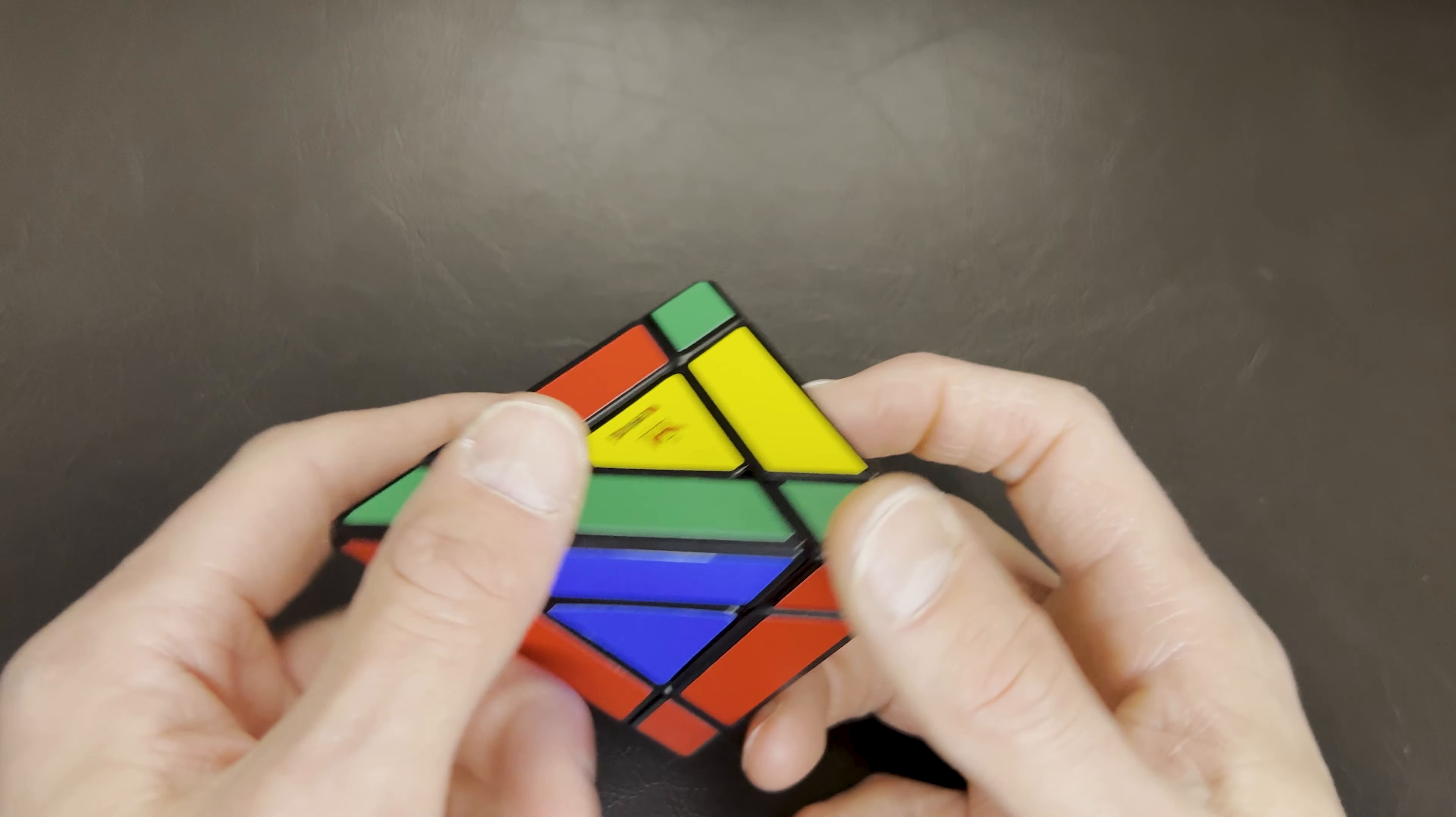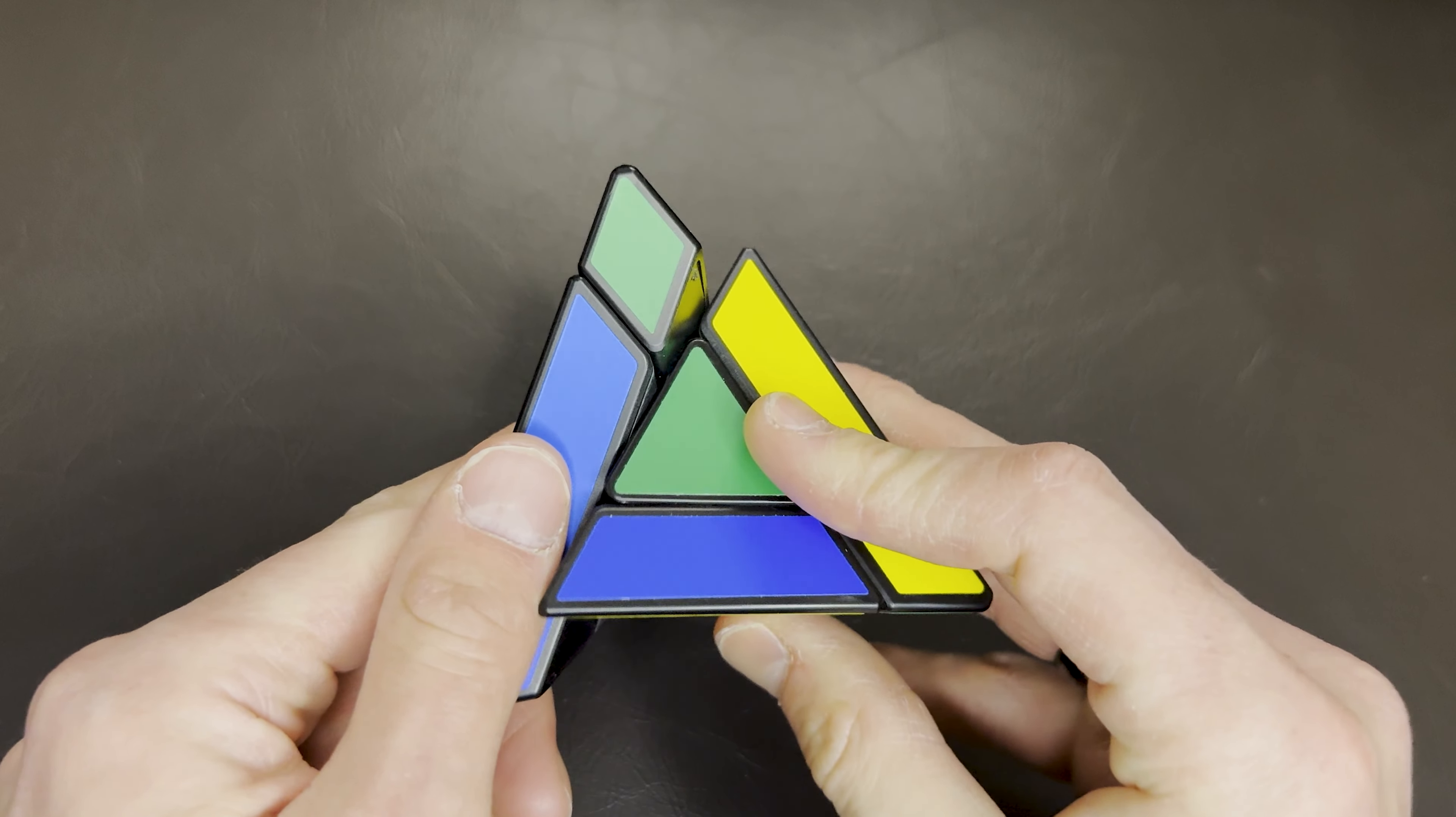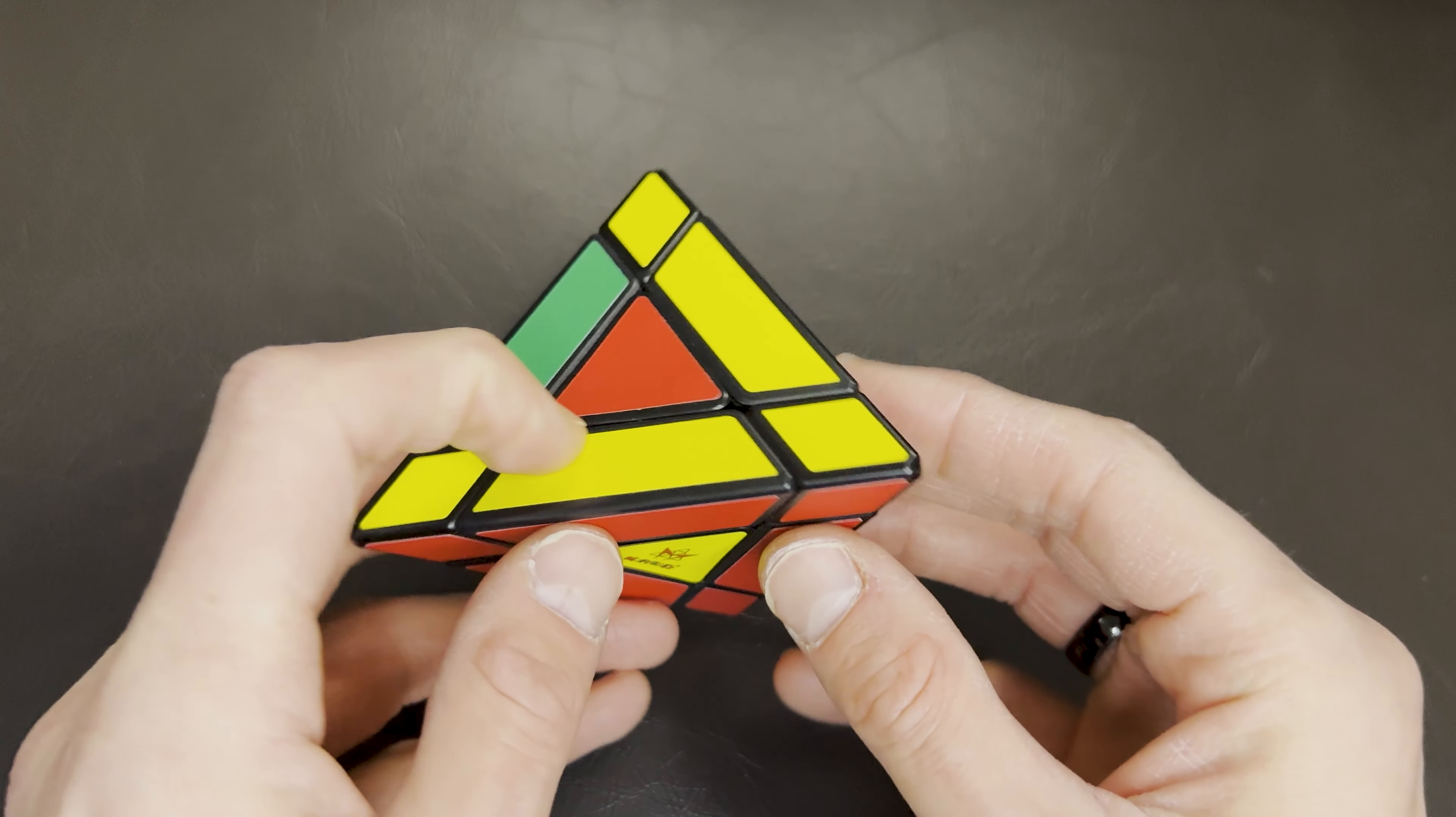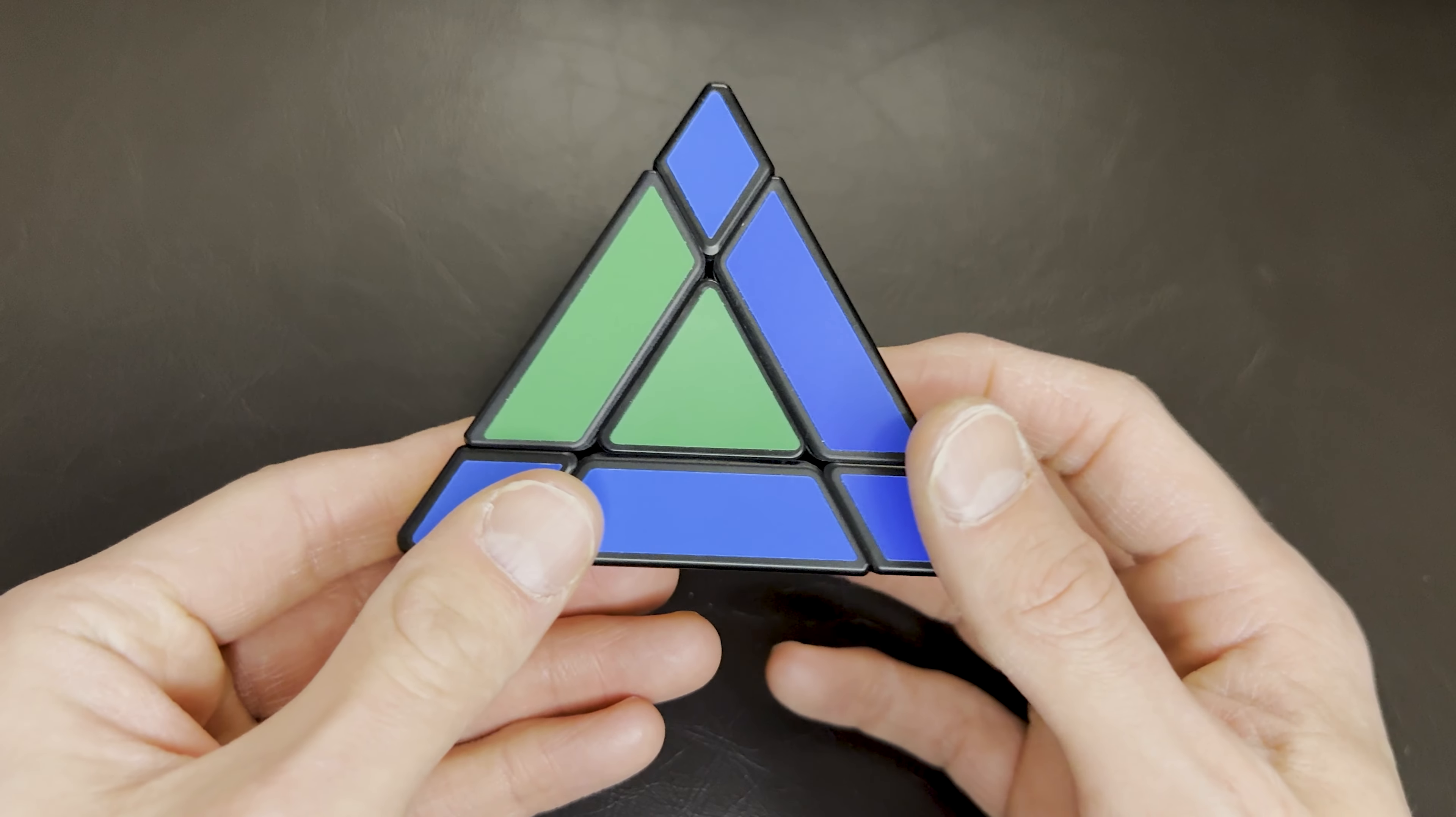And now we want this red piece down here. So left down, right down, left up, and right up. Red green, red yellow, red blue. And that's the end of that step.